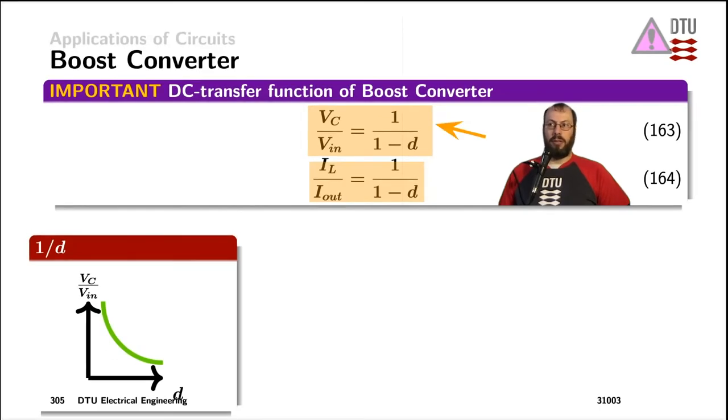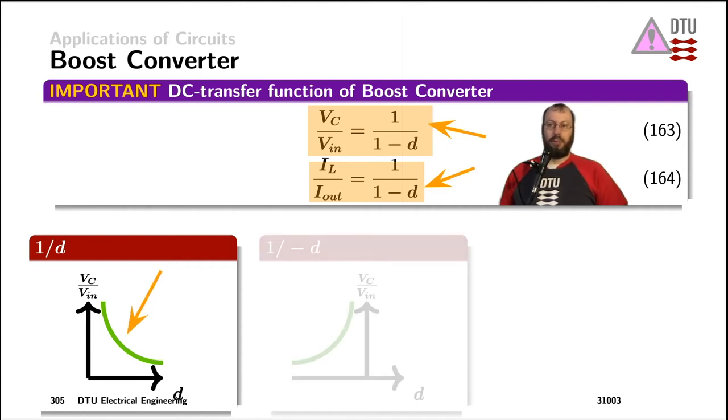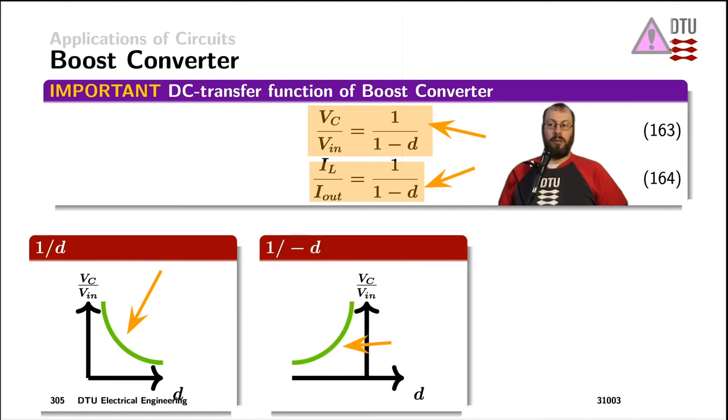Both of those DC transfer functions are 1 over 1 minus the duty cycle. Now if we plot 1 over the duty cycle, we get a hyperbolic function. Adding a minus in front of that mirrors that function on the y-axis from the first quadrant into the second quadrant.